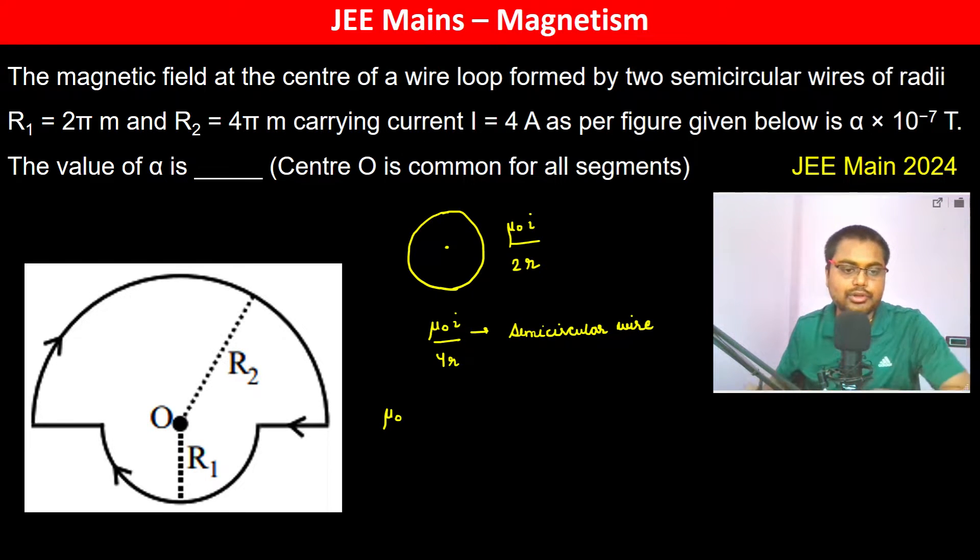So therefore we have to write mu_0 i, i is 4 ampere, so mu_0 into 4 ampere divided by 4 into r, r is 2π meter, plus mu_0 i which is again 4 ampere divided by 4 into 4π meters.